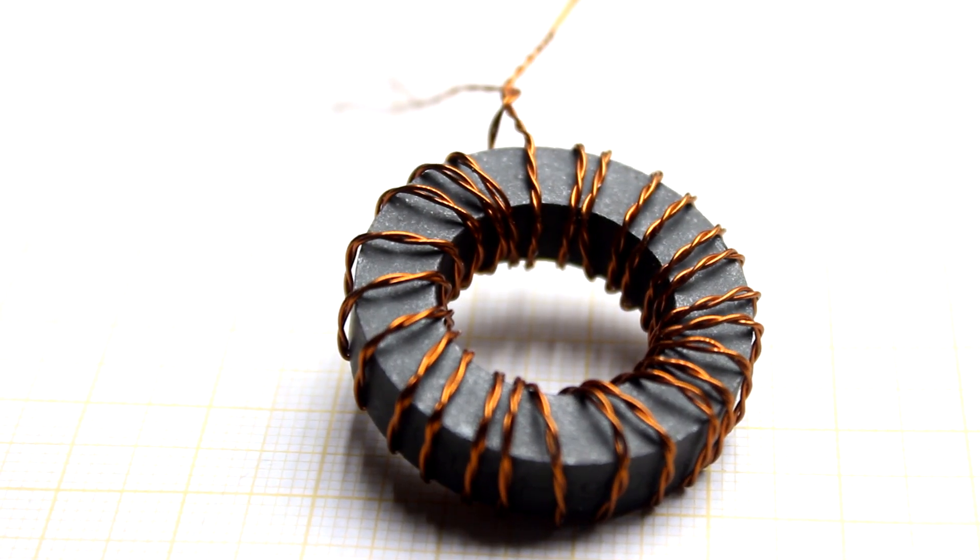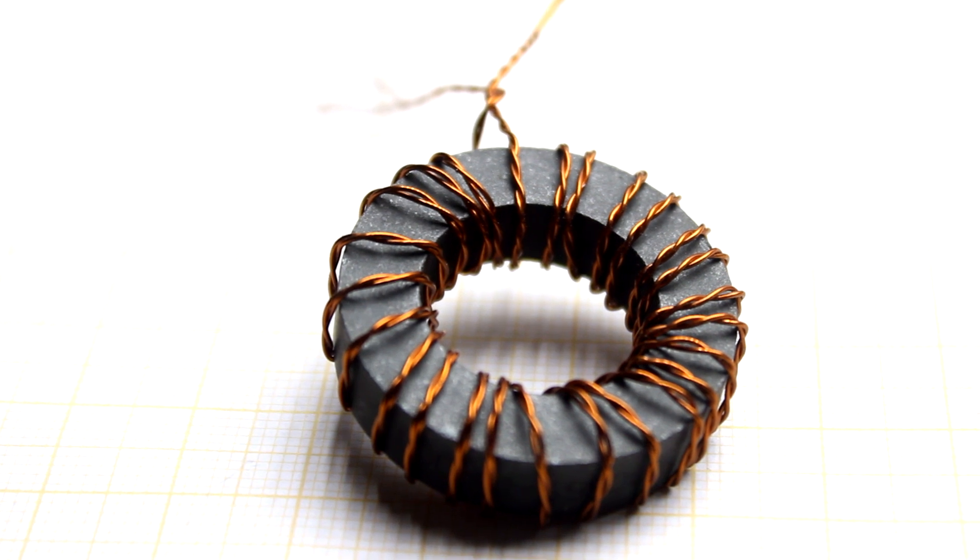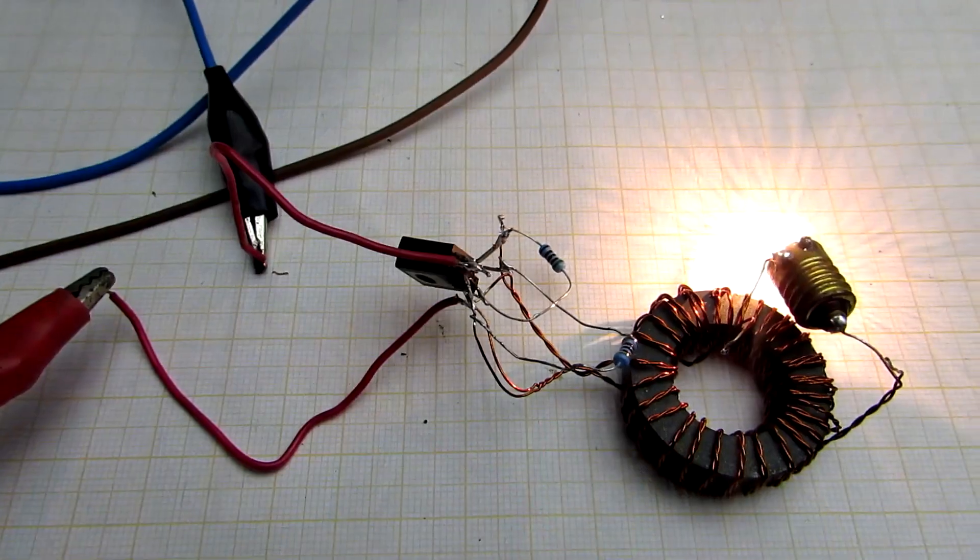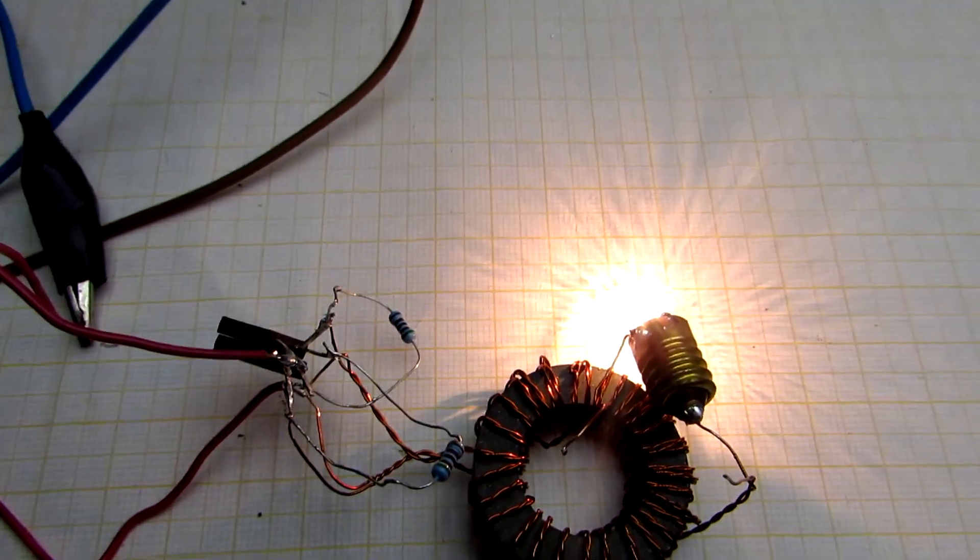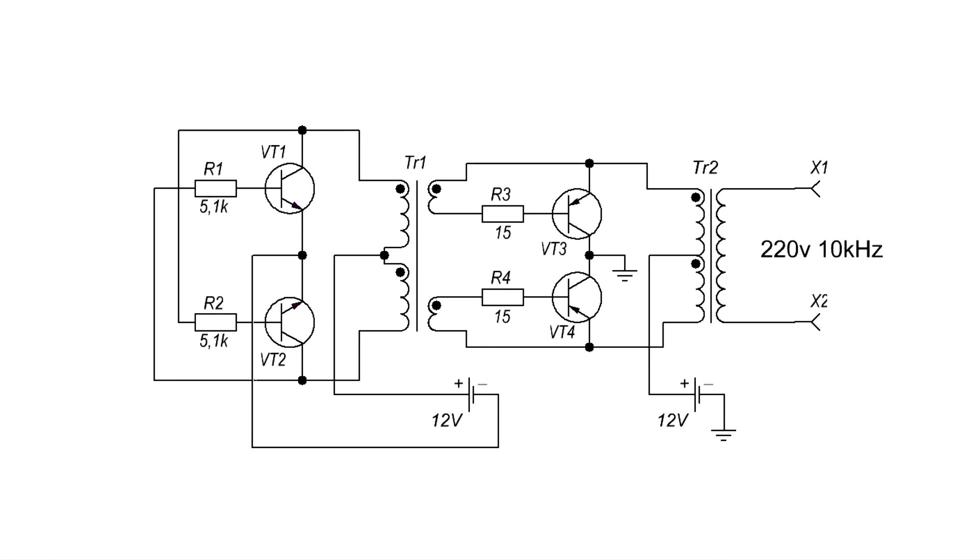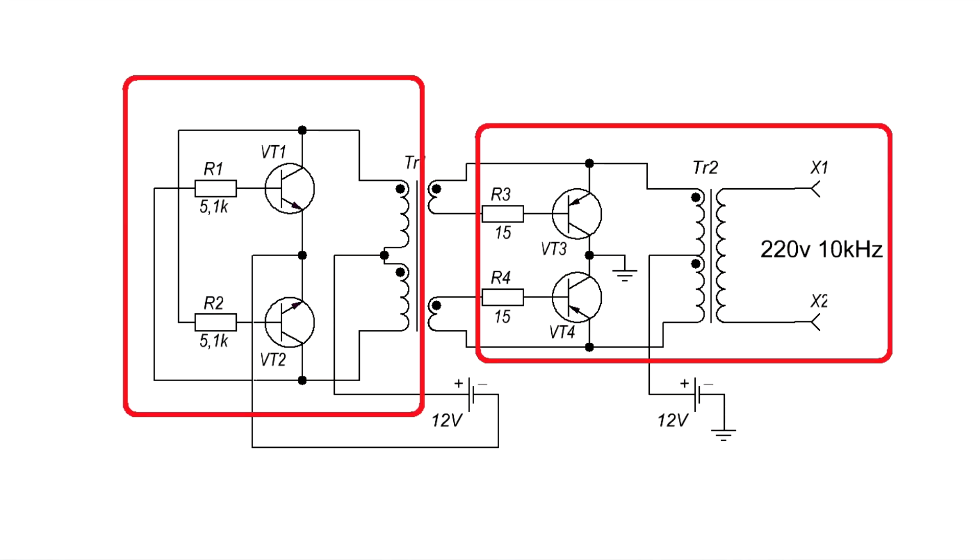Transformer control of power transistors gives a lot of advantages. First, there is no need for an additional driver for transistor management, since the transformer provides a fairly large control current. And if the control current is fed from a separate low power source, we get complete galvanic isolation between the power section and the control circuit.